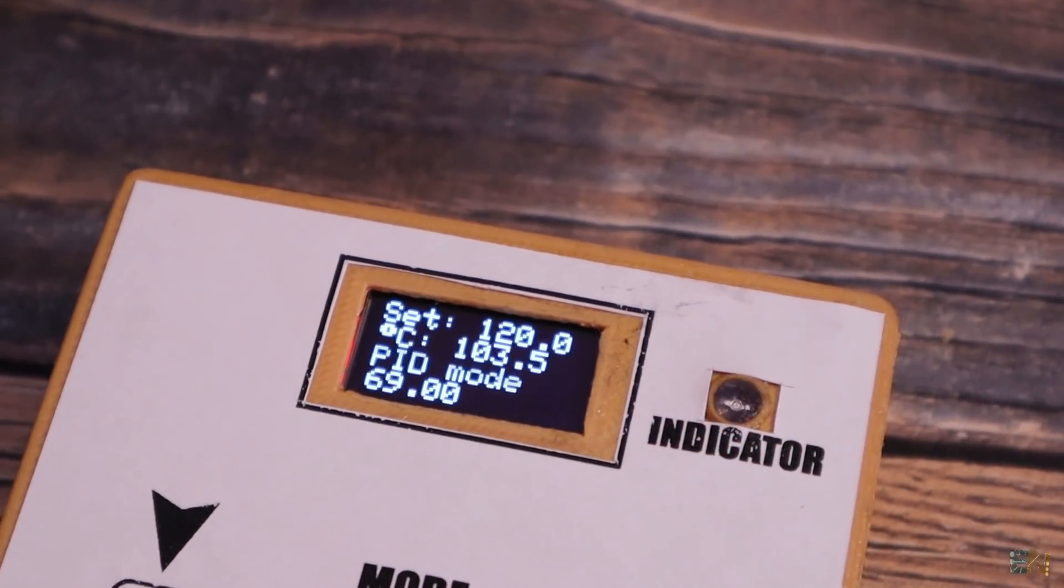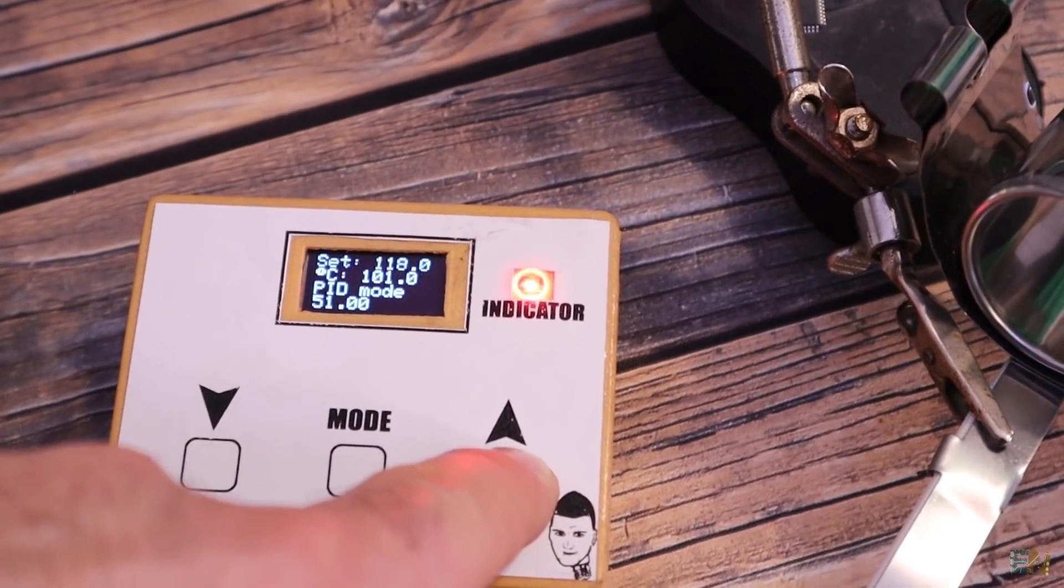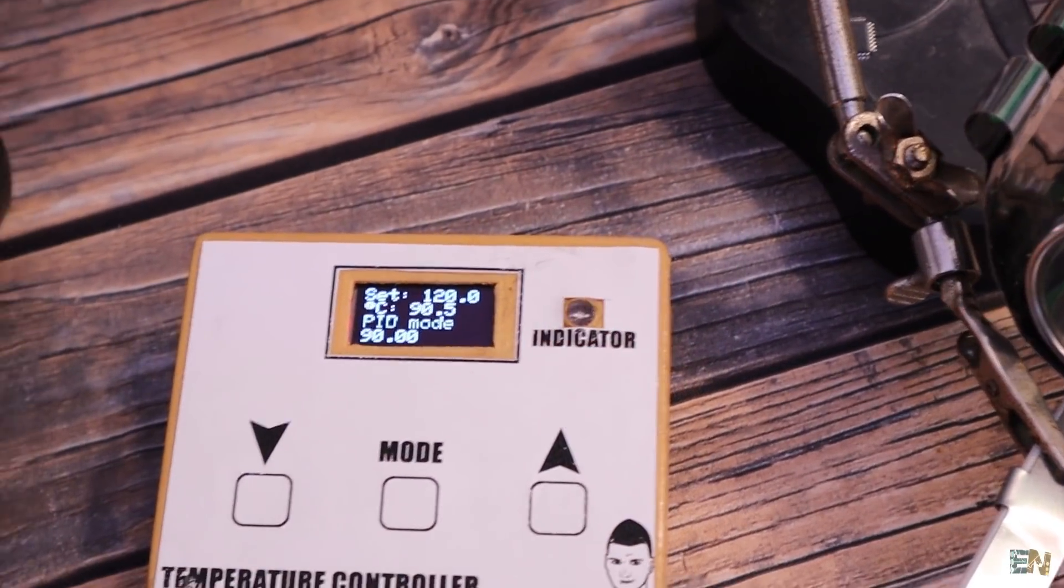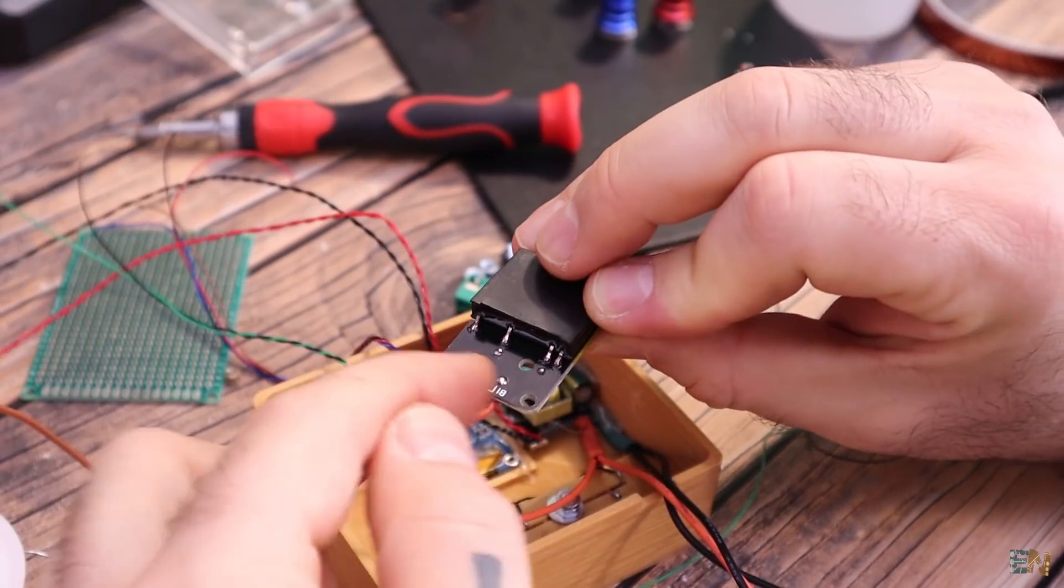This device could measure precisely the temperature from a thermocouple, display those values on a screen, calculate a PID algorithm and control a solid state relay according to those values in order to control the power applied to a heating element.